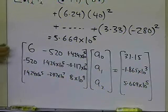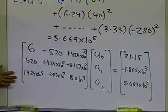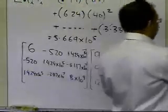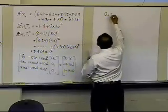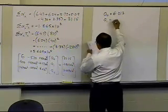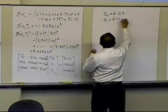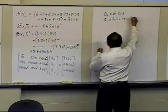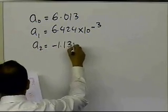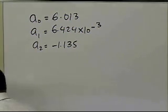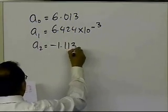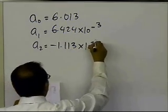which I can do using any of the methods I've learned in simultaneous linear equations, such as Gaussian elimination. This is what I get for the values of a0, a1, and a2. So a0 turns out to be 6.013, a1 turns out to be 6.424 times 10 to the power minus 3, and a2 turns out to be minus 1.113 times 10 to the power minus 5.